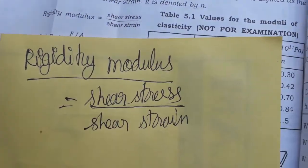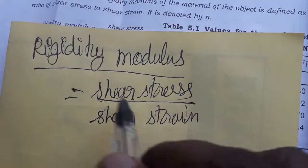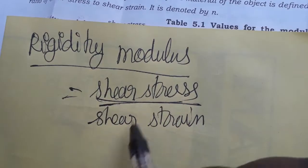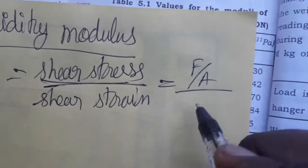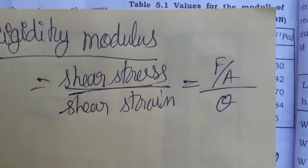Today we are going to learn rigidity modulus, its SI unit, and dimensional formula. Rigidity modulus is shear stress by shear strain. Shear stress is force per unit area, and strain is a change in angle.